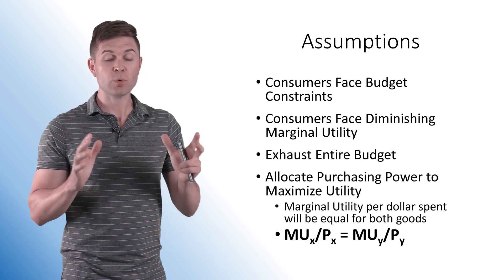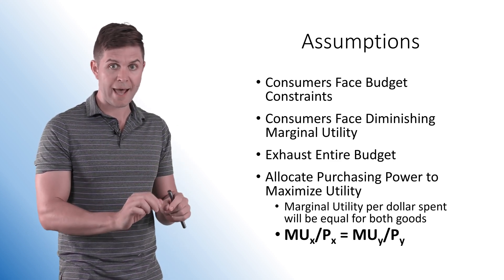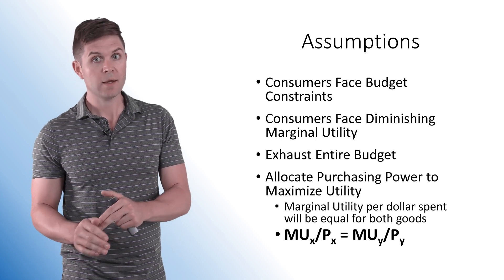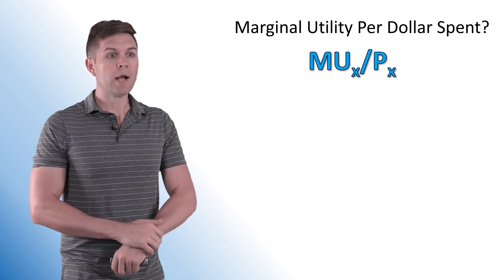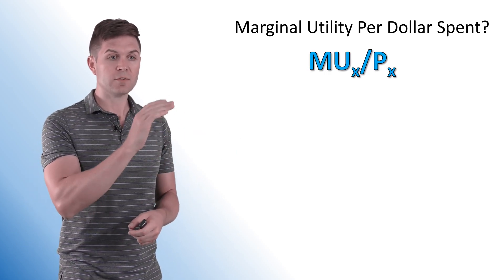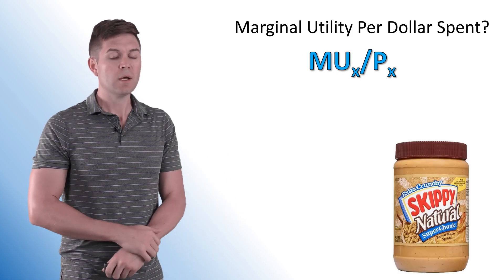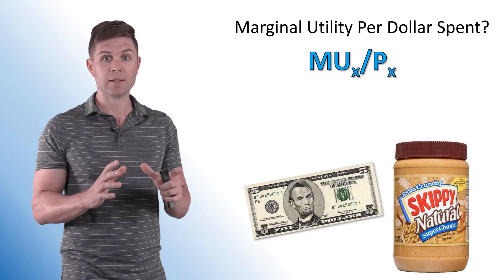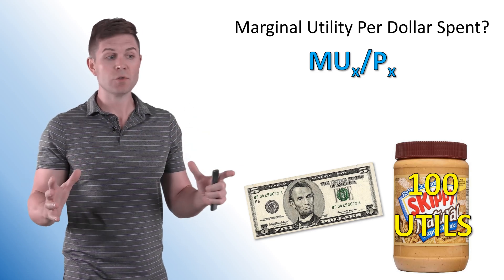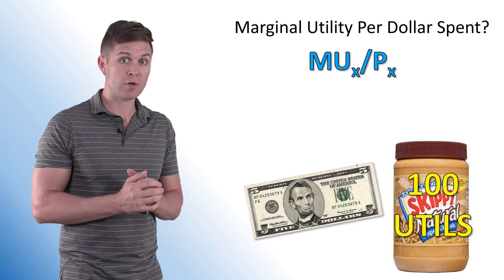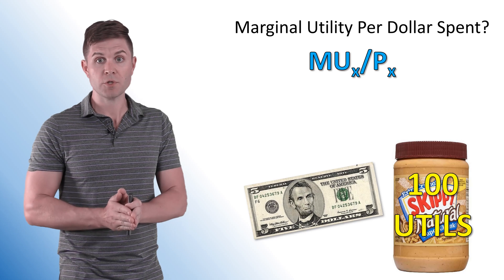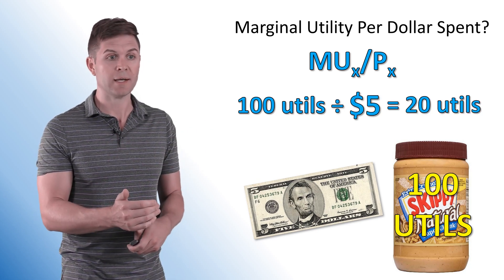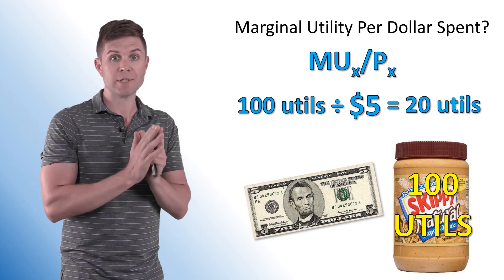That equation — marginal utility of good X divided by the price of good X equals the marginal utility of good Y divided by the price of good Y — is what we're trying to achieve. So what is the marginal utility per dollar spent? Marginal utility of X divided by price of X gives us the marginal utility per dollar spent. For example, a jar of peanut butter costs $5 and gives 100 utils of satisfaction. That's a marginal cost of $5 and marginal benefit of 100 utils. The per dollar marginal utility is 100 divided by $5, which equals 20 utils per dollar.